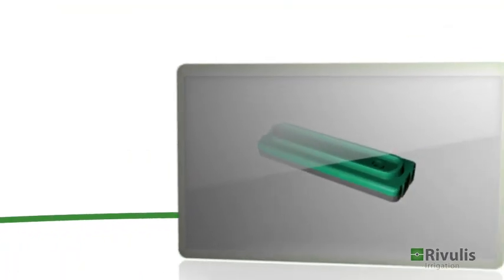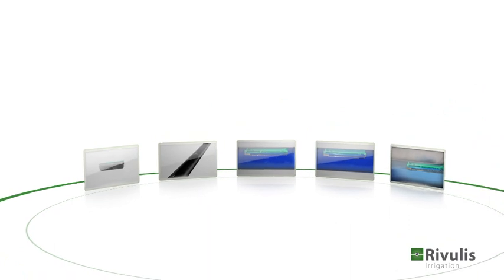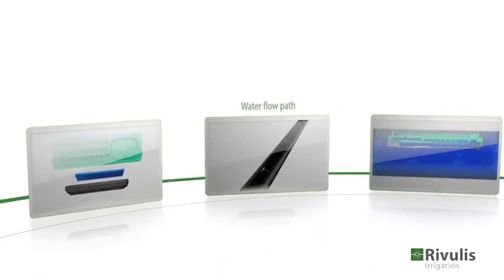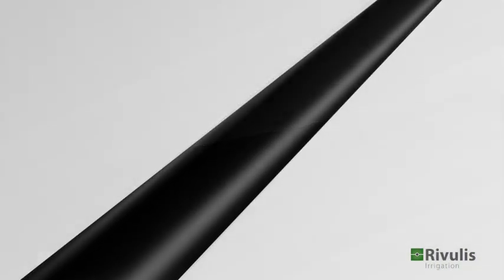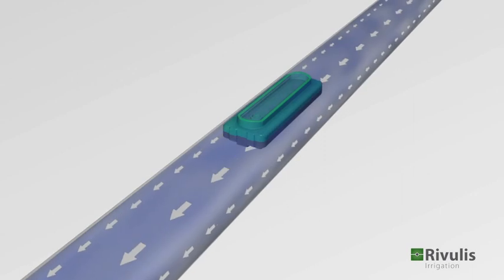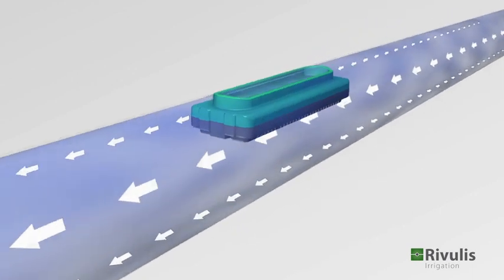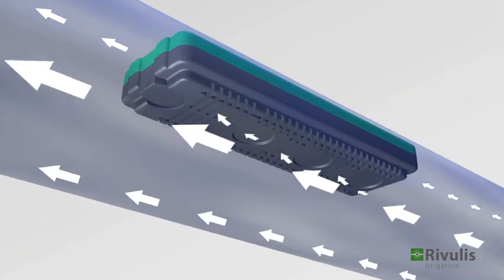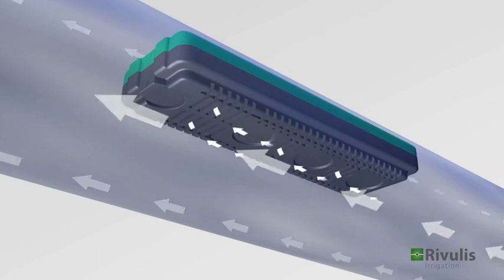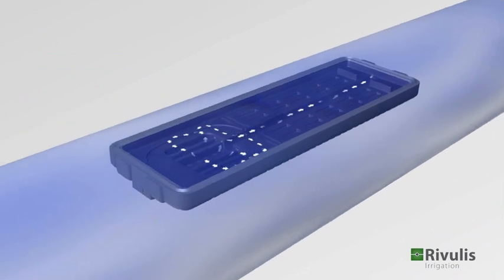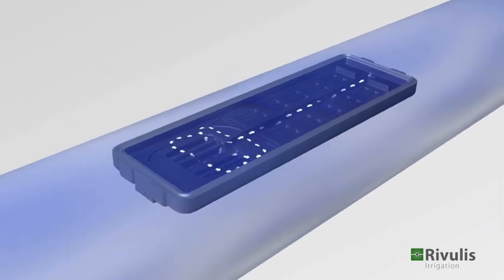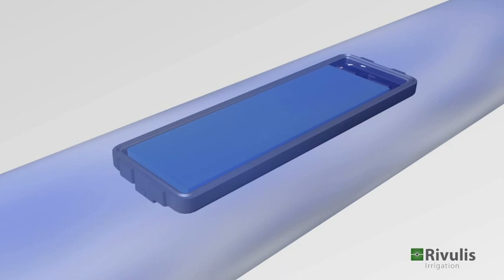Let's take a closer look at the ingenious design of the D5000 dripper. Each D5000 dripper is equipped with three parallel inlet filters which provide a large and effective filtration surface. The filters are located far from the tube wall, enabling the water to flush them continuously.